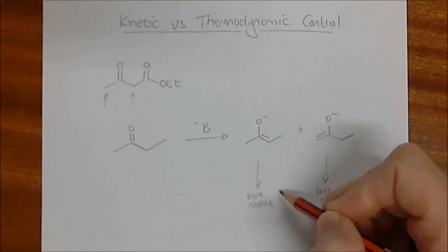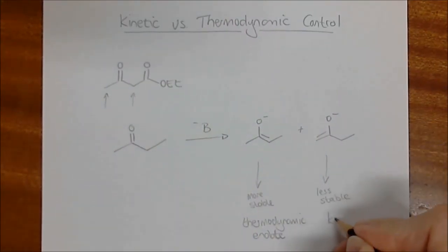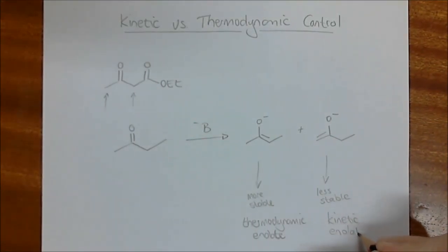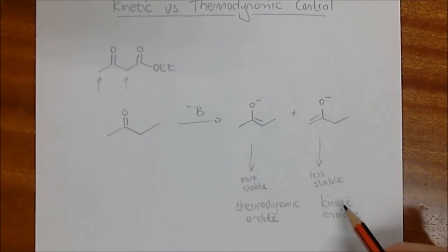But the more stable enolate, we call that the thermodynamic enolate, and the less stable one is called the kinetic one. Let me explain where this comes from. The thermodynamic enolate comes from the fact that it is the more stable one. Thermodynamically, it is the more stable enolate. Whereas the kinetic enolate, kinetic has that word speed associated with it. It is the enolate that is formed faster.